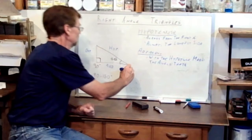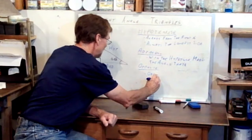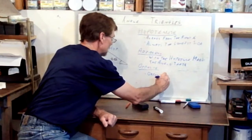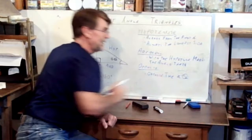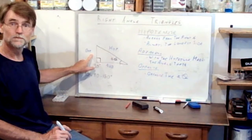Finally, the third side of a right angle triangle is the opposite. The opposite is quite simply opposite — or across from — the angle theta. So the hypotenuse is across from the 90-degree right angle, and the opposite is across from the angle theta.